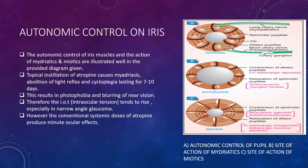Miosis involves contraction of the sphincter pupillae — done by muscarinic agonists — and relaxation of the dilator pupillae by alpha-adrenergic antagonists and adrenergic neuron blockers. This is how the autonomic nervous system controls the eye. Miotic agents work by contraction of the ciliary muscles, tightening the trabecular meshwork and allowing increased outflow of aqueous humor through traditional pathways. Miosis results from the action of these drugs on the pupillary sphincter, and miotic agents are usually parasympathomimetics.